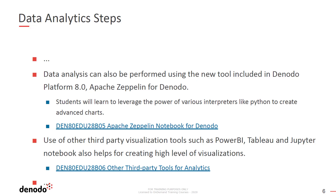There is a new tool included in Denodo Platform 8 called Apache Zeppelin for Denodo, which also helps in performing data analytics. It leverages the power of various interpreters, like Python, to create advanced charts. In the Apache Zeppelin notebook for Denodo module, you will learn about querying Denodo from Zeppelin notebook for data analytics, see details about installation and configuration of the Apache Zeppelin for Denodo tool, and finally understand how to query and create visualizations in it.